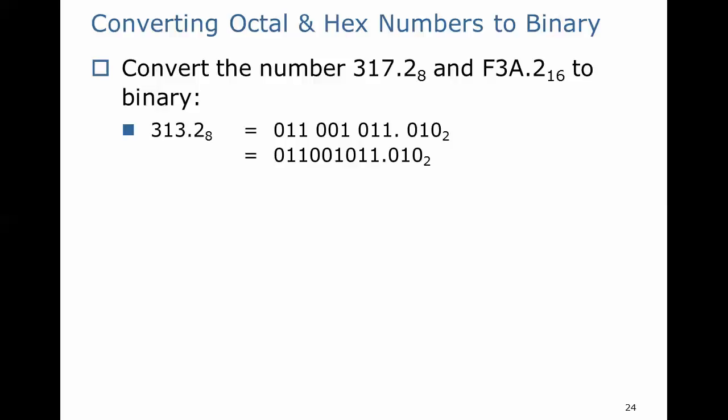Starting with the most significant digit, which is 3, we convert that to binary, which is 011. We then convert the 1 to 001, convert the 3 to 011, and then we convert .2 to .010. Then we put those all together, not showing the distinction between each triplet of bits.